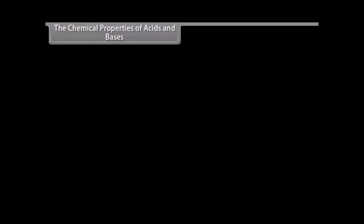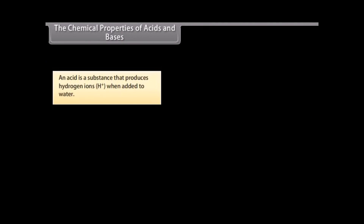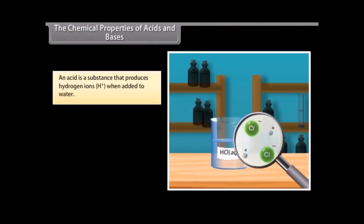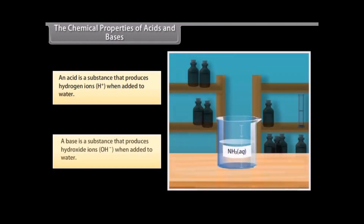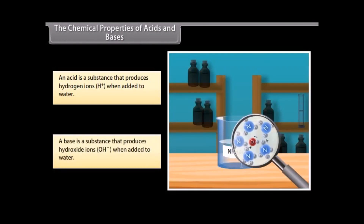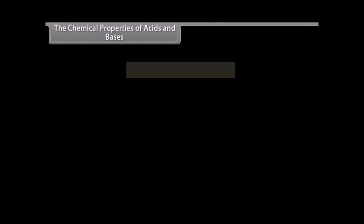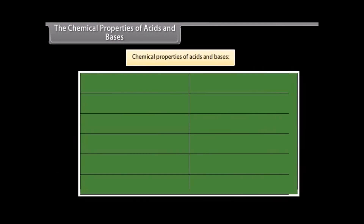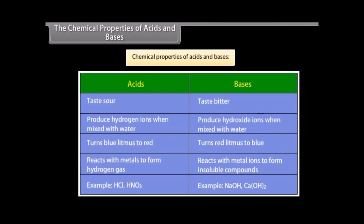The chemical properties of acids and bases. An acid is a substance that produces hydrogen ions when added to water, whereas a base is a substance that produces hydroxide ions when added to water. Both acids and bases have different chemical properties.